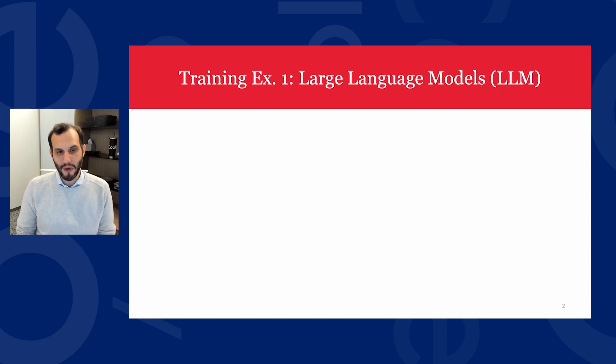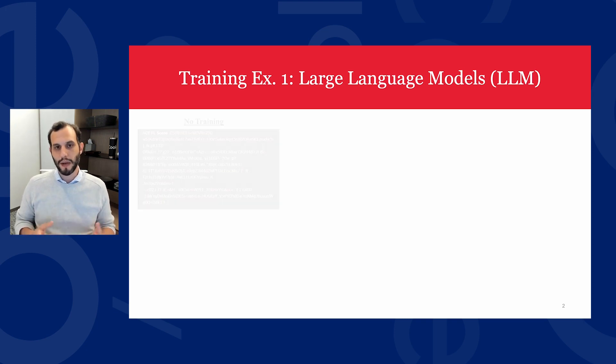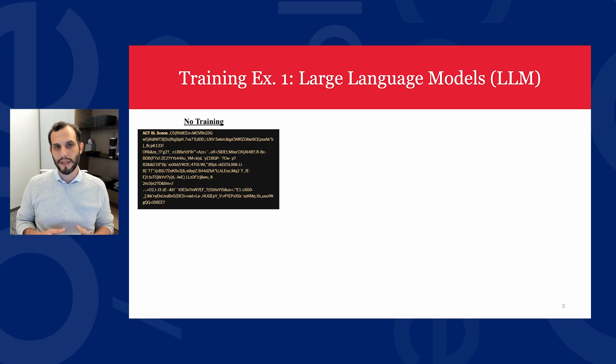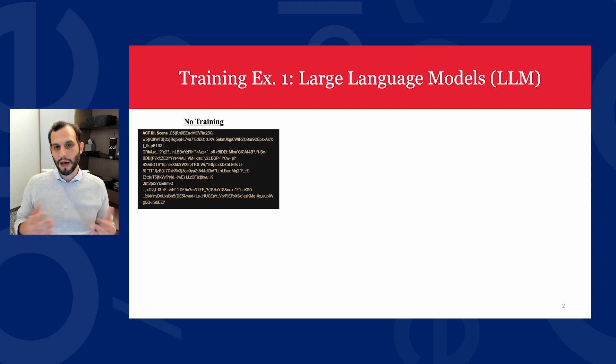What does that look like in practice? What does it mean to train an artificial intelligence? Imagine for a moment that we have a deep learning language model and we feed it only the complete works of Shakespeare, as the journalist Atish Bhatia did in writing for the New York Times in early 2023. We then asked the model to autocomplete text letter by letter, starting from the prompt "Act 3 Scene." In this first example, you can see that without any training, the model just guesses randomly and produces gibberish.